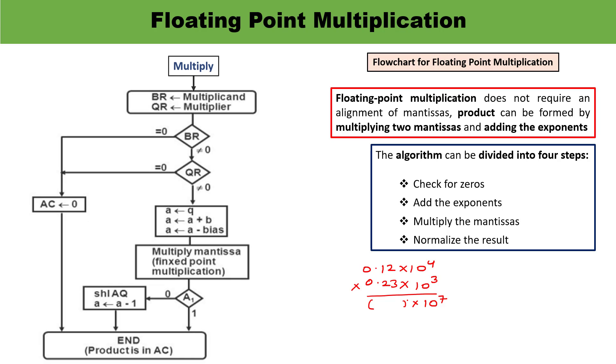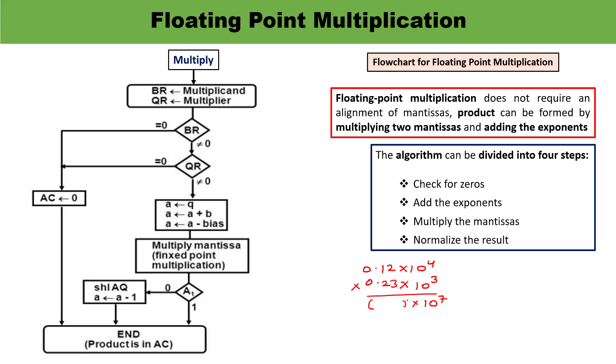Now let us understand the flowchart for multiplication. The multiplicand is in BR, multiplier is in QR. If BR is 0, the result will be 0. If BR is non-zero or QR is 0, result will always be 0. If both numbers are 0, result will be 0. The result is stored in the accumulator and that will be the end of the program.